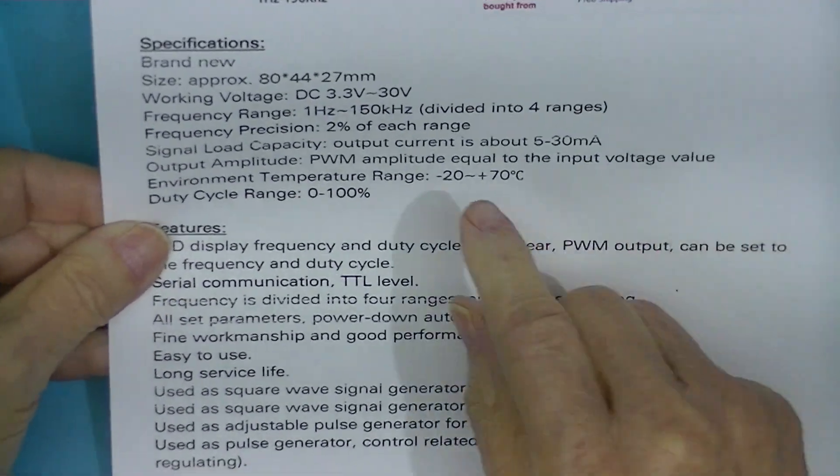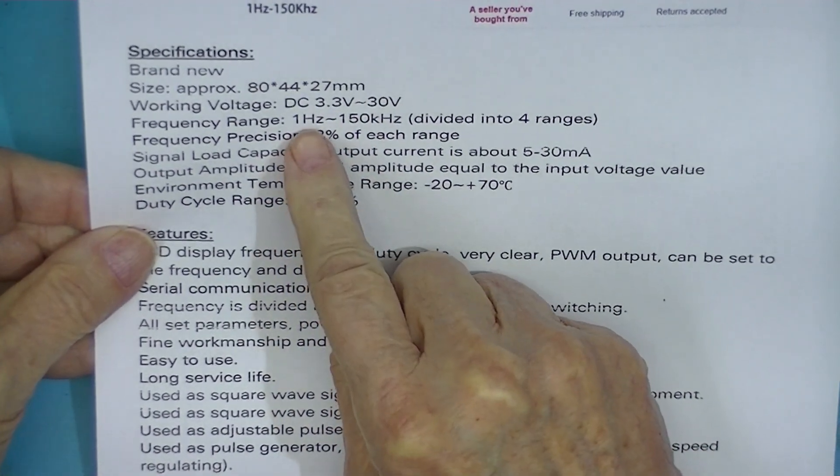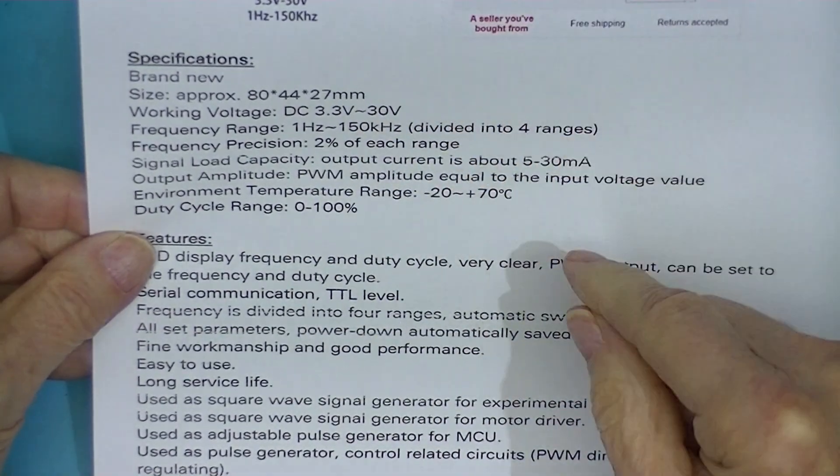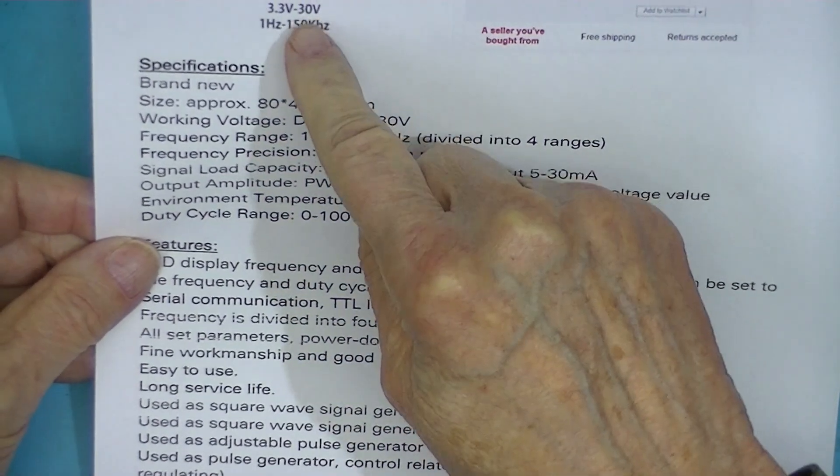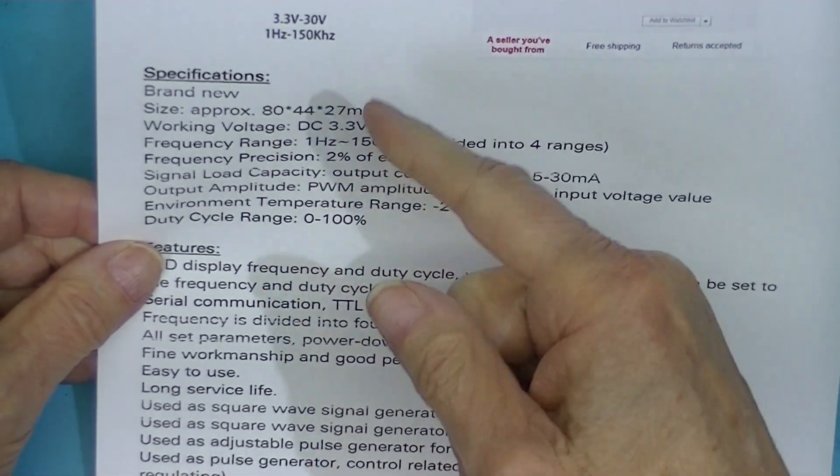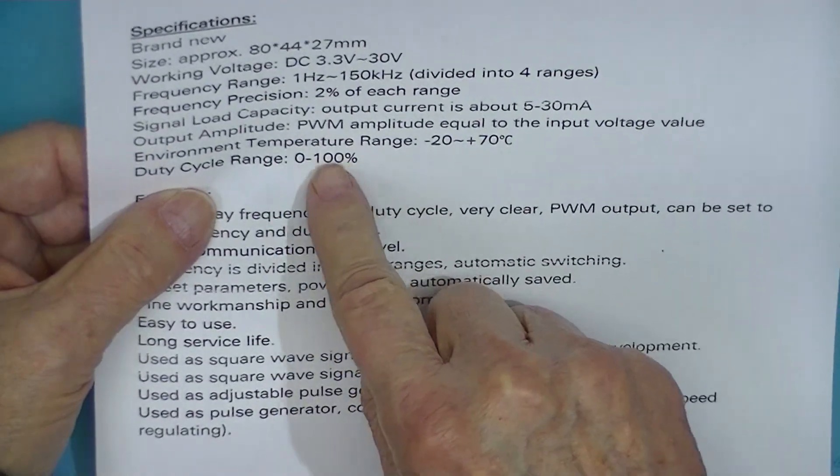This thing works on 3.3 to 30 volts, 1 hertz to 150 kilohertz pulse. The amplitude of the pulse is equal to the power supply. So it's just a switching on-off. The duty cycle of the pulse is supposedly 0 to 100%.